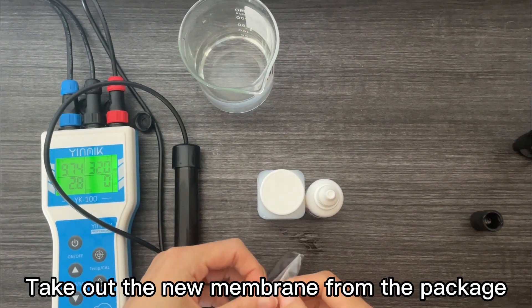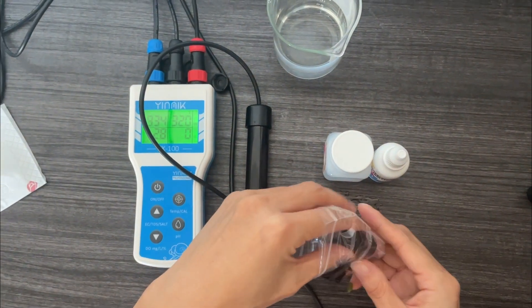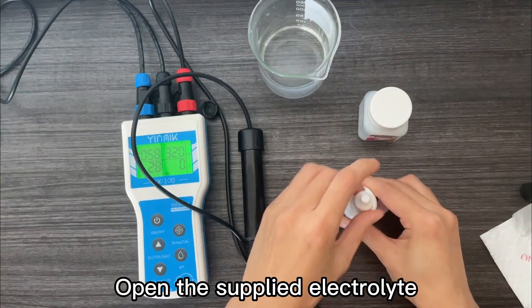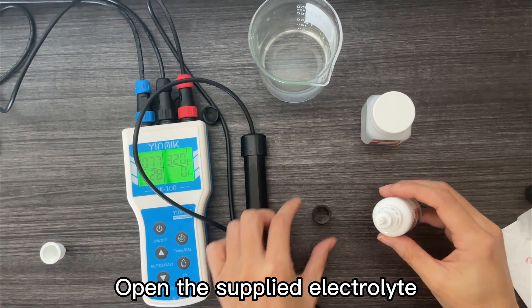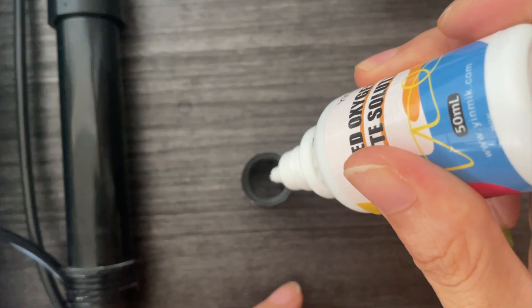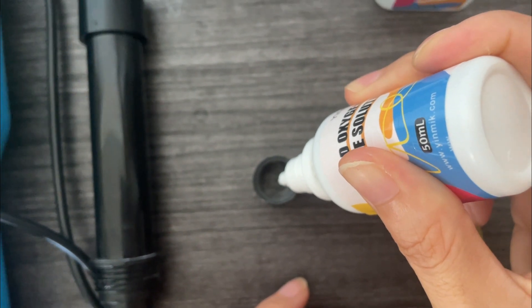Take out the new membrane from the package. Open the supplied electrolyte. Pour the electrolyte into the membrane. Add three-quarters or full of electrolyte.